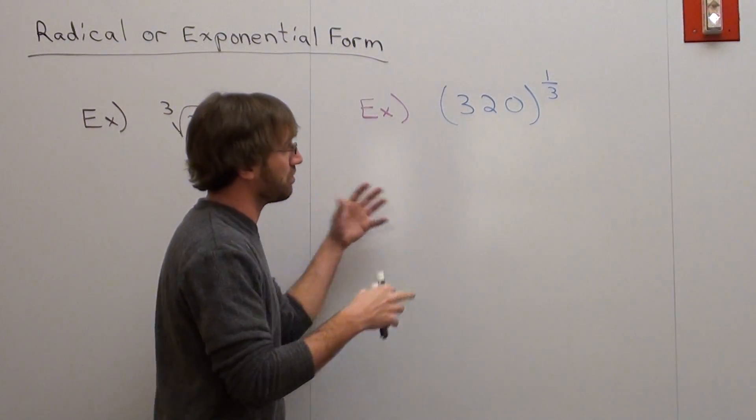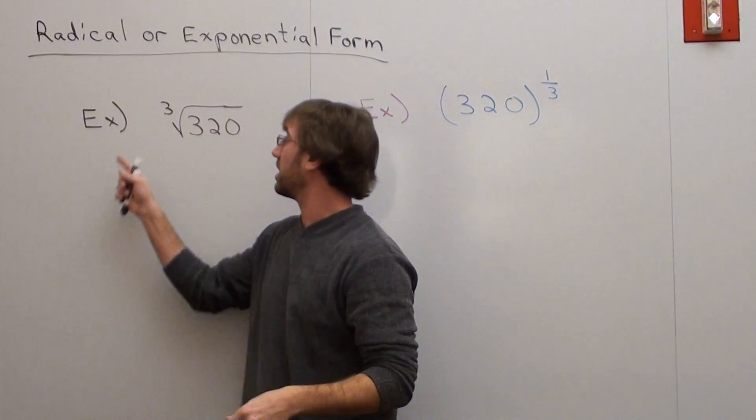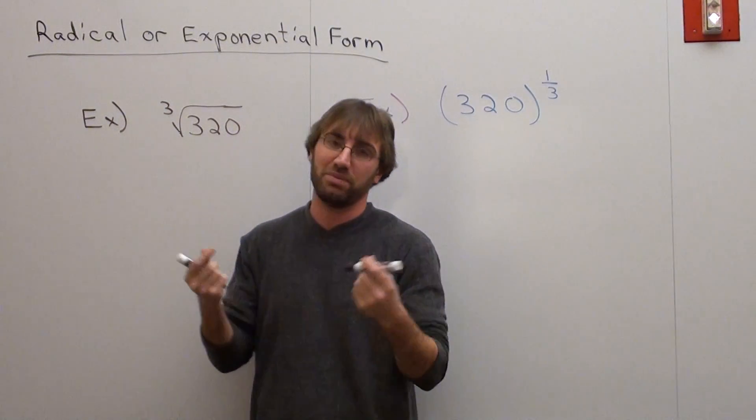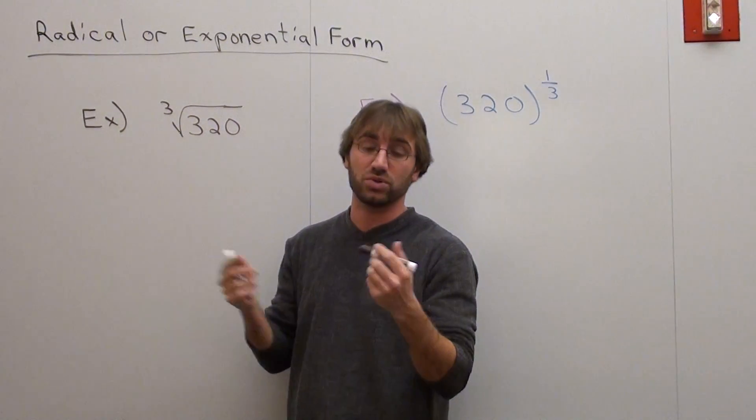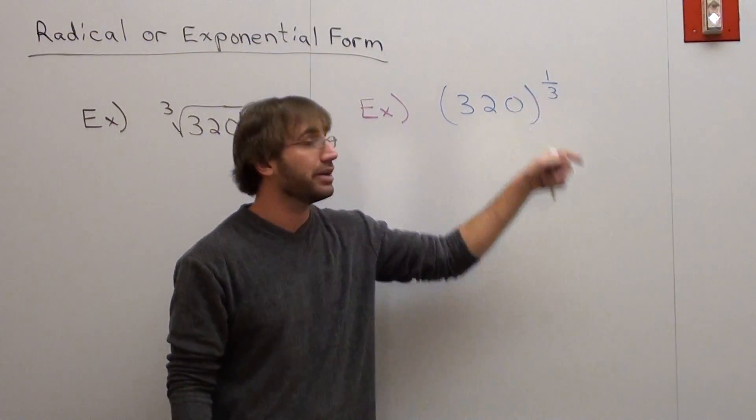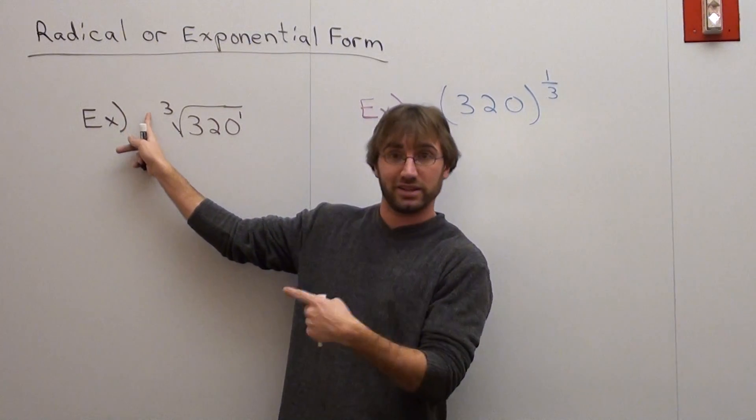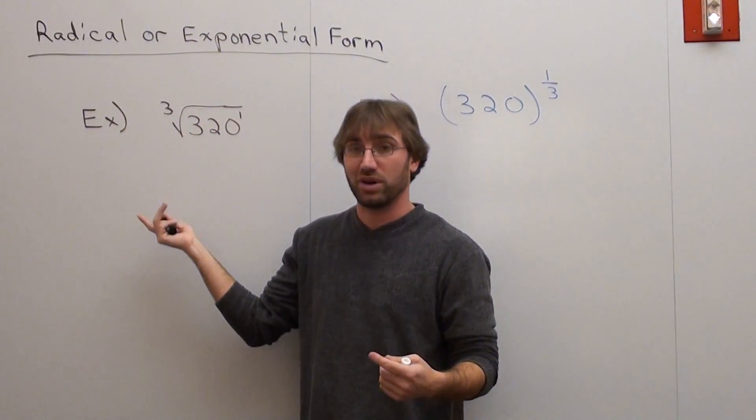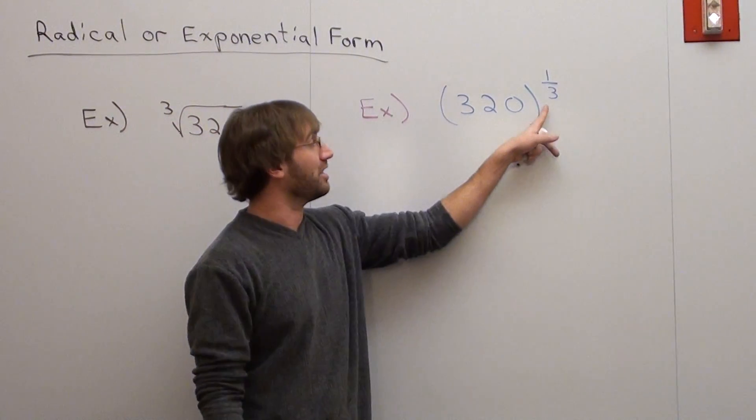You should know that they're interchangeable. 320 to the one-third is the same thing as the cube root of 320, because it's the cube root of 320 to the first power. The power inside is the numerator, and whatever the root number is, is the denominator.